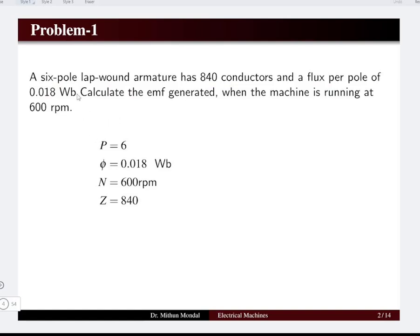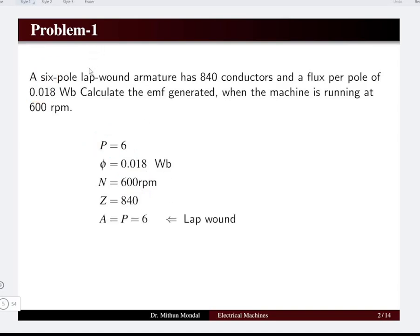The information given: total number of poles is 6, flux produced is 0.018 Weber, speed is 600 RPM, and total number of conductors is 840. The armature windings are lap wound connected. In lap wound, the number of parallel paths equals the number of poles, which is 6.